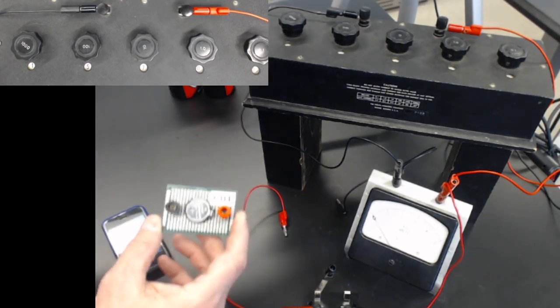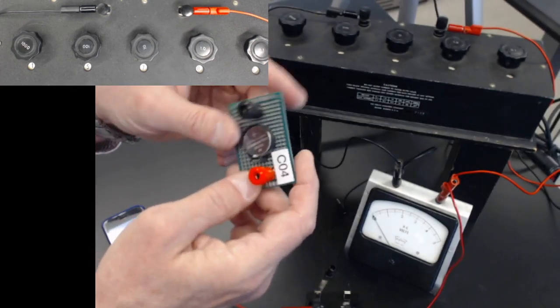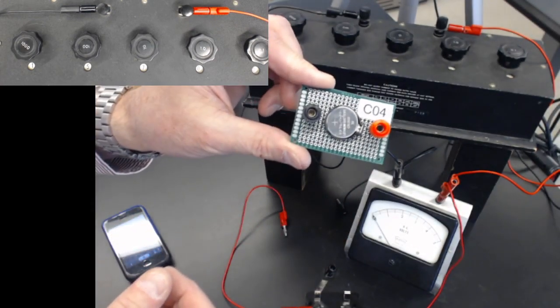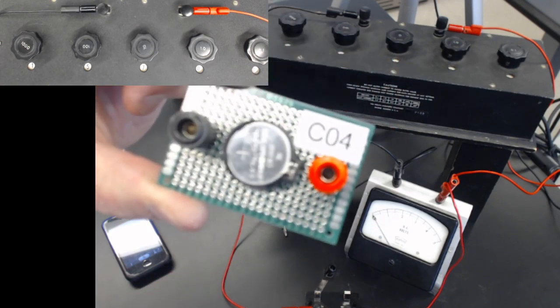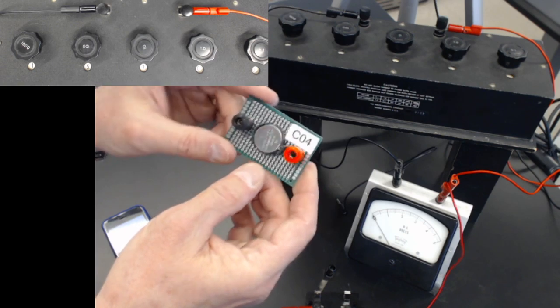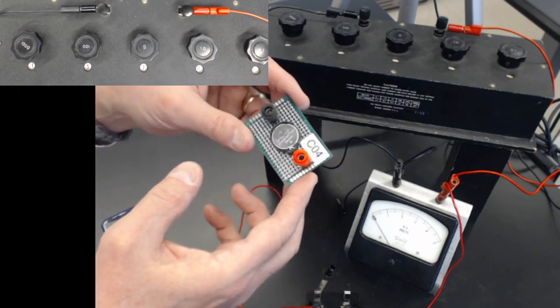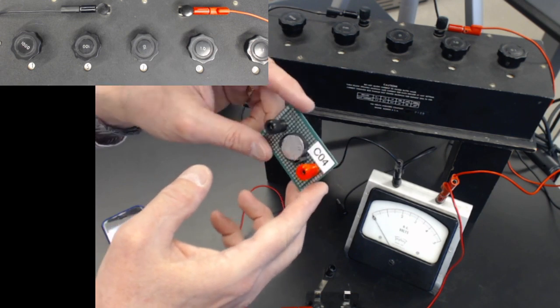Here's another measurement we can make, and this is a coin cell, a CR2032. This one I don't think is dead. You can get the code number. This is the kind of watch battery or low current cell that goes into little appliances or little things.